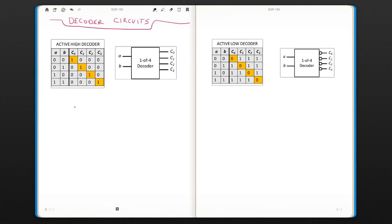We will now discuss how we can implement decoder circuits. On the left, this is the active high decoder. The outputs are, only the output that is chosen is one. We call it a one-of-four decoder because only one of the outputs is chosen at one time.